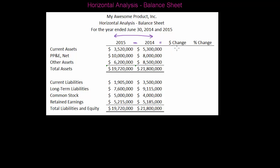Unlike when you were doing the flex budget, we're actually going to say whether or not these changes are positive or negative because there's no favorable or unfavorable column here. So I'm going to take three million five hundred twenty thousand minus five million three hundred thousand — that's going to give me a negative number because the 2014 number is larger than the 2015 number. That gives me a change of negative one million seven hundred eighty thousand.